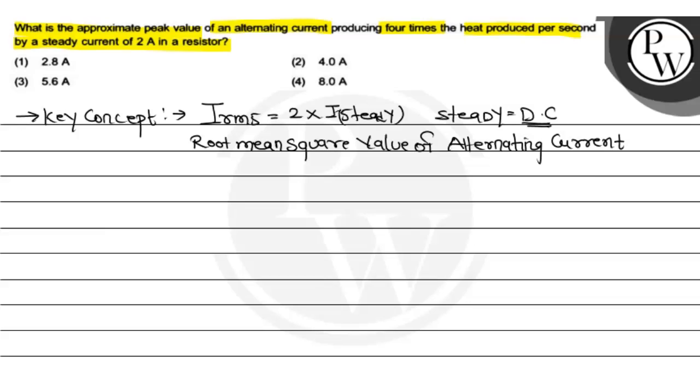And the second formula is I_max divided by root 2. You can see I_not by root 2. So this is the basic formula. This is our formula number second and the first is formula number first.